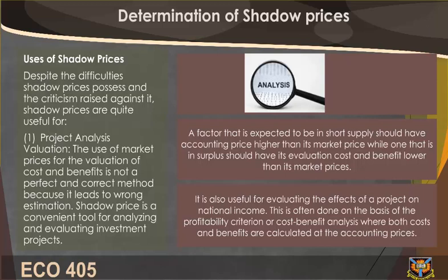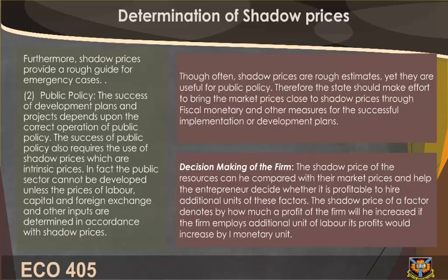The use of market prices for valuation of costs and benefits is not a perfect method because it leads to wrong estimation. Shadow price is a convenient tool for analyzing and evaluating investment projects — a factor expected to be in short supply should have an accounting price higher than its market price, while one in surplus should have its evaluation cost and benefits lower than its market price. Shadow prices are also useful for evaluating the effects of a project on national income through profitability criteria of cost-benefit analysis, and provide a rough guide for emergency cases.